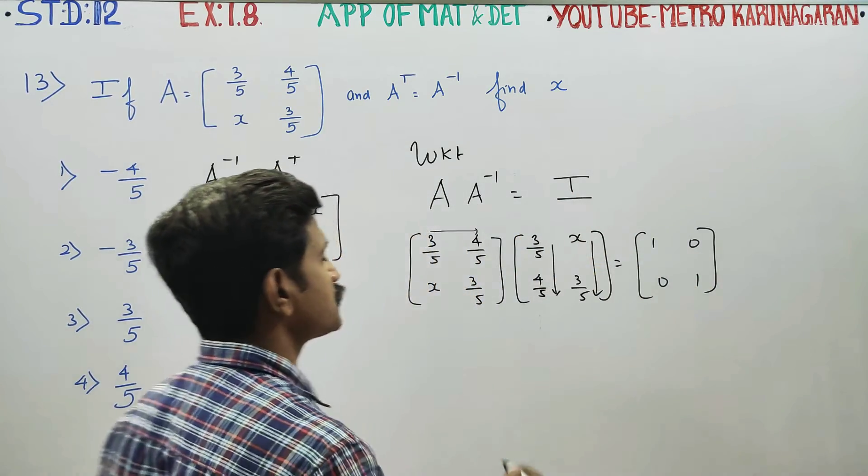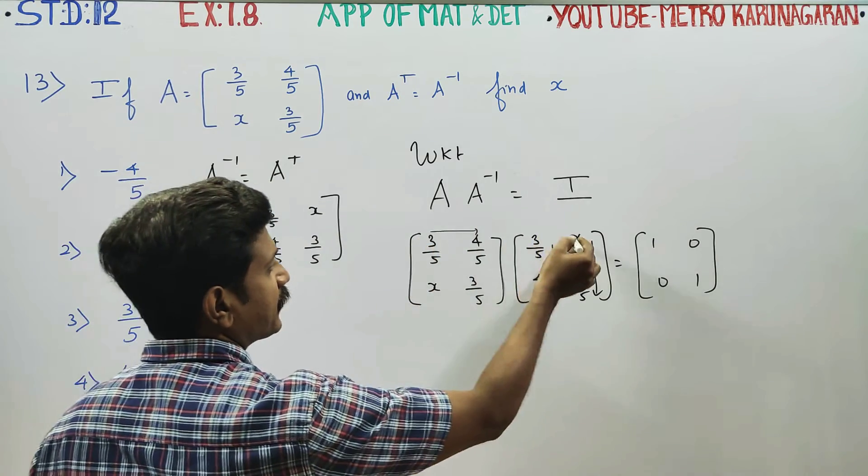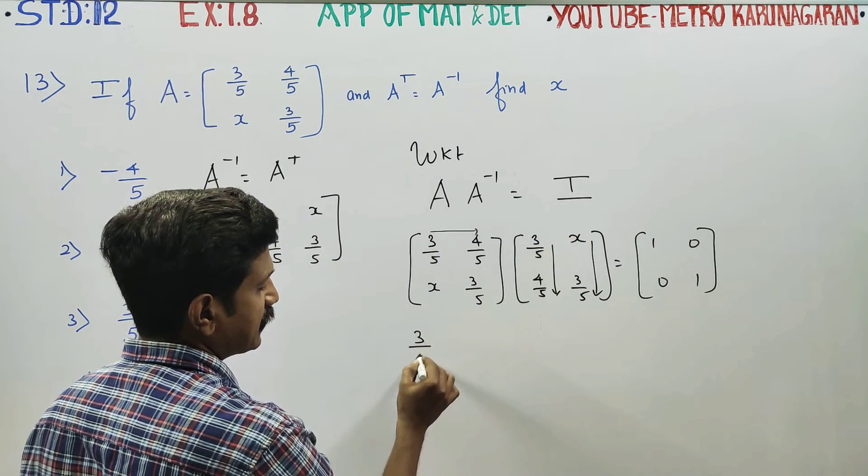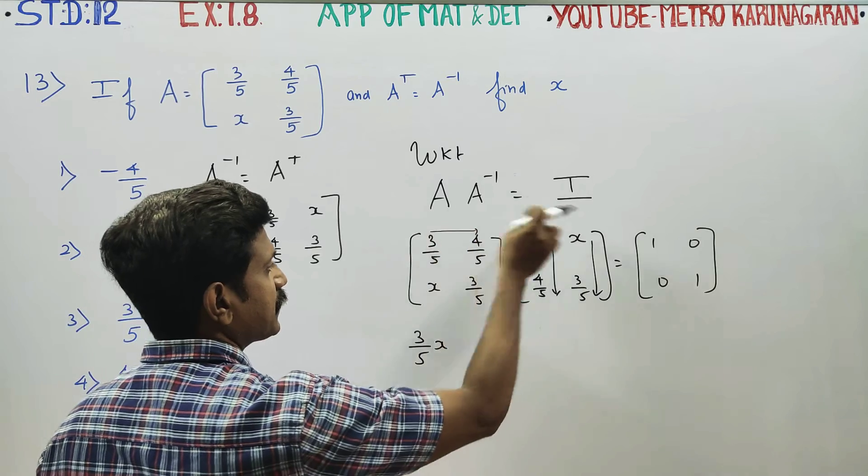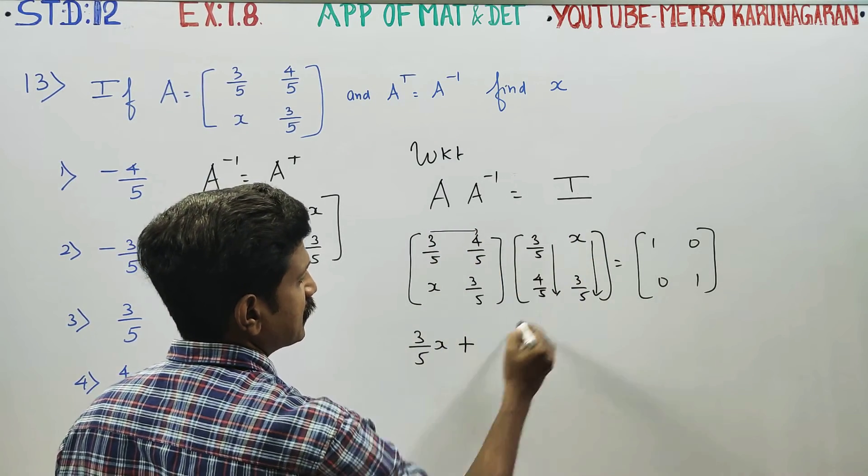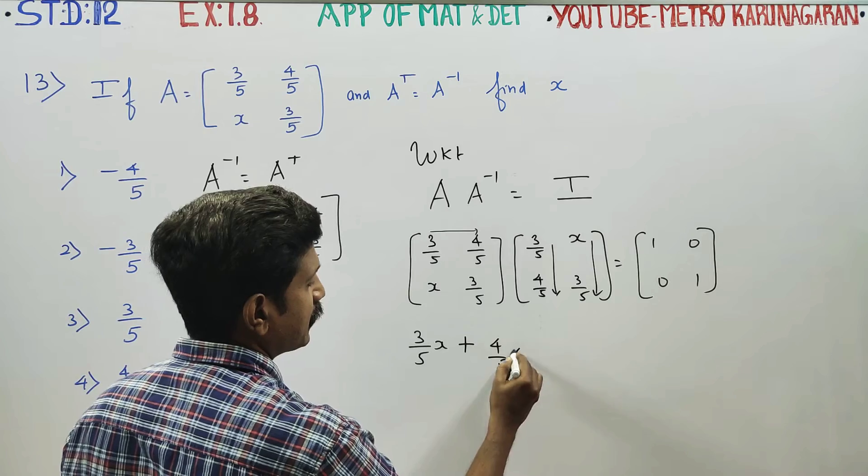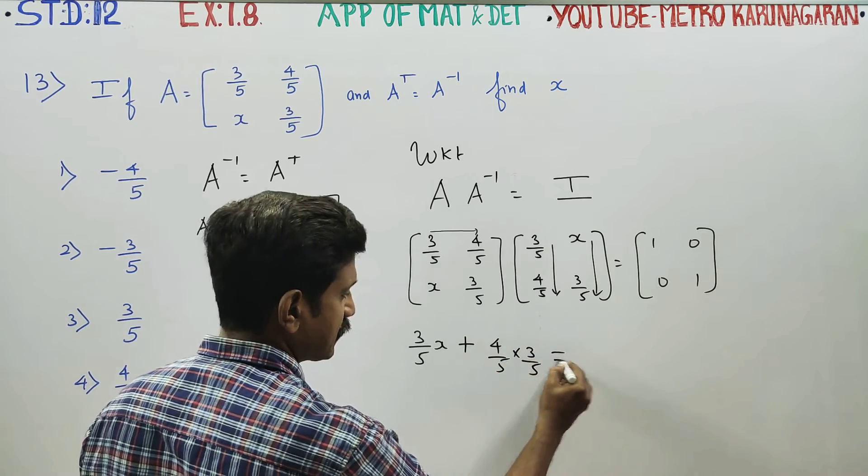Now, 3 by 5 into 3 by 5, plus 4 by 5 into 3 by 5 is equal to...